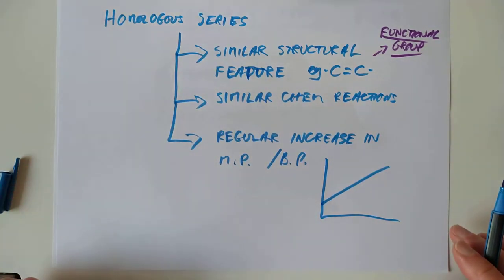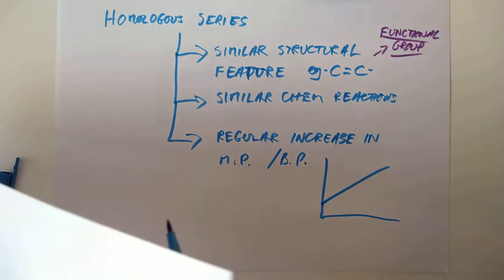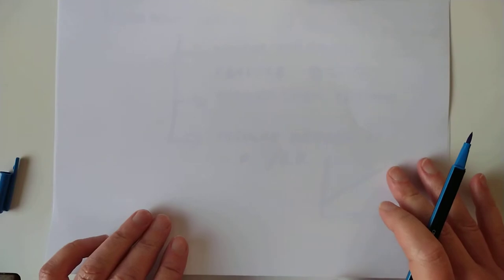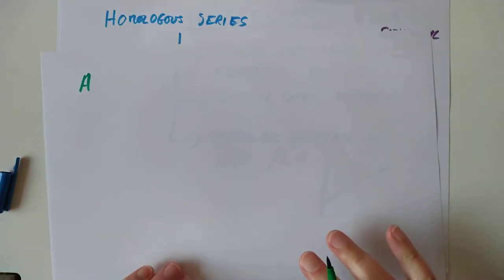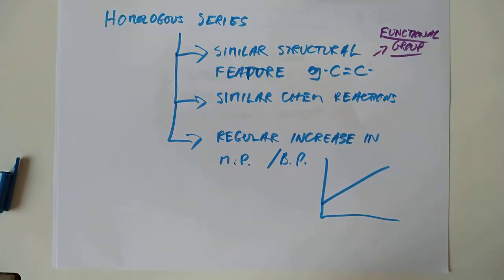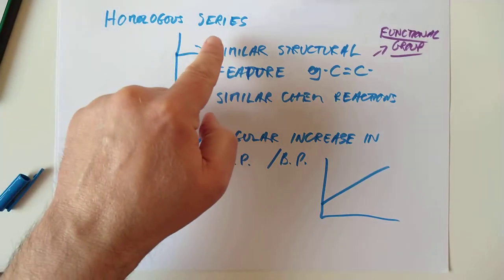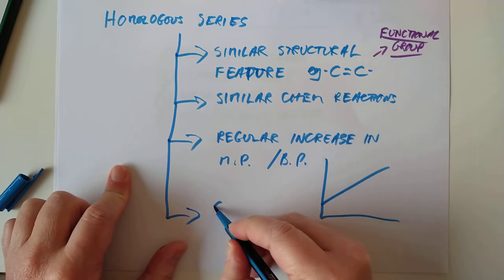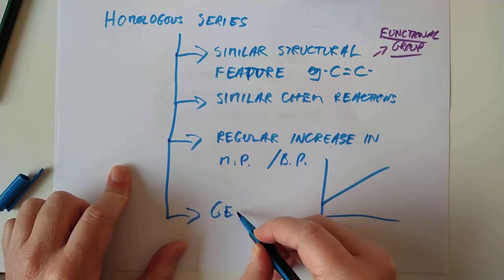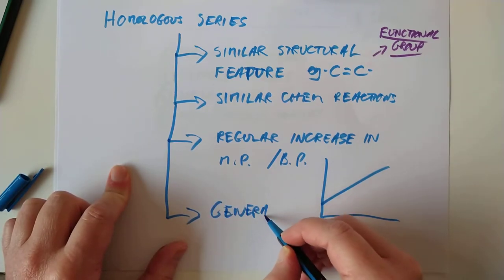So that was the definition of a homologous series from last year. At the very minimum, you covered two homologous series last year. Something important: all the members of a series have what's called a general formula — they all fit a general formula.